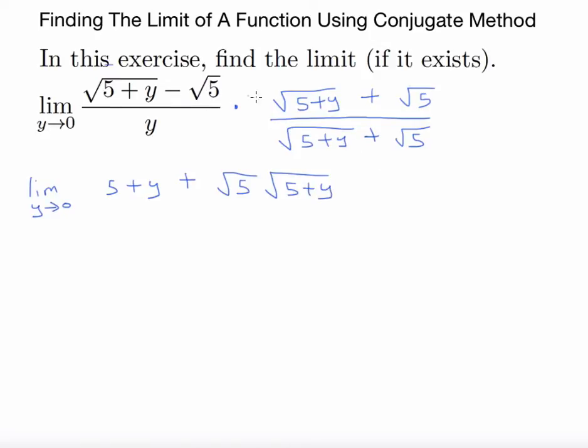Now you have minus root 5 times this, that will be minus root 5 times root 5 plus y, and minus root 5 times positive root 5 is going to give you minus 5.